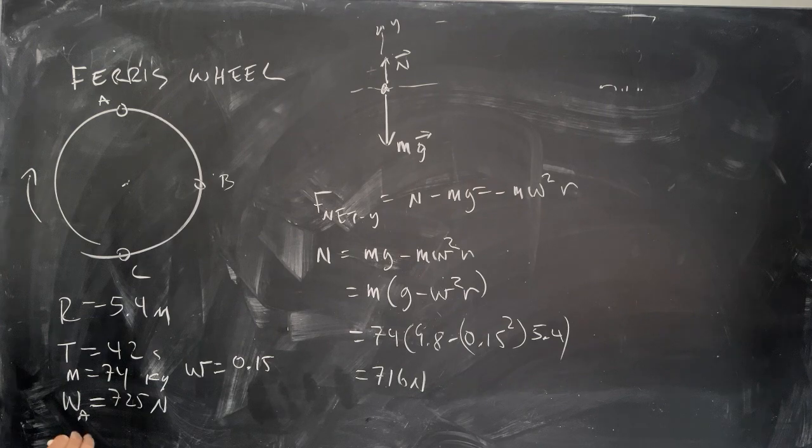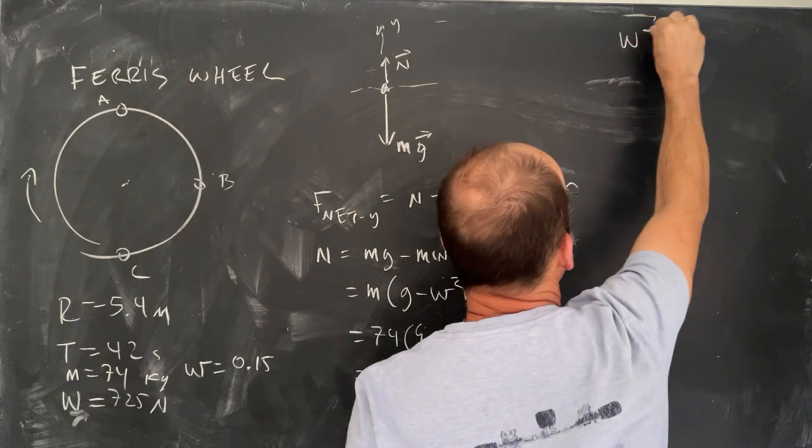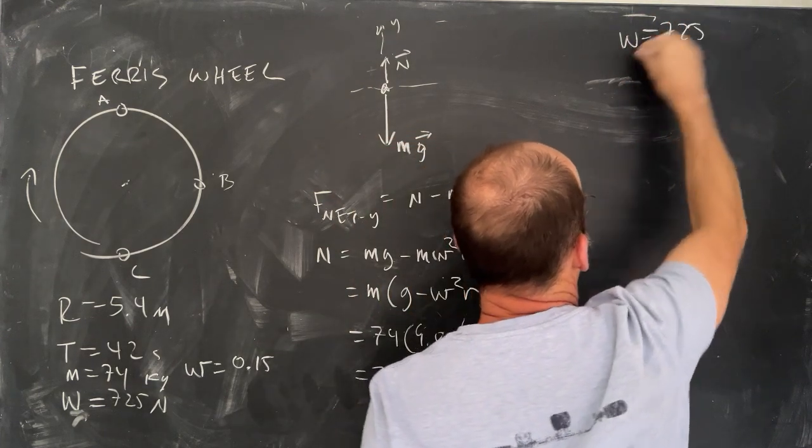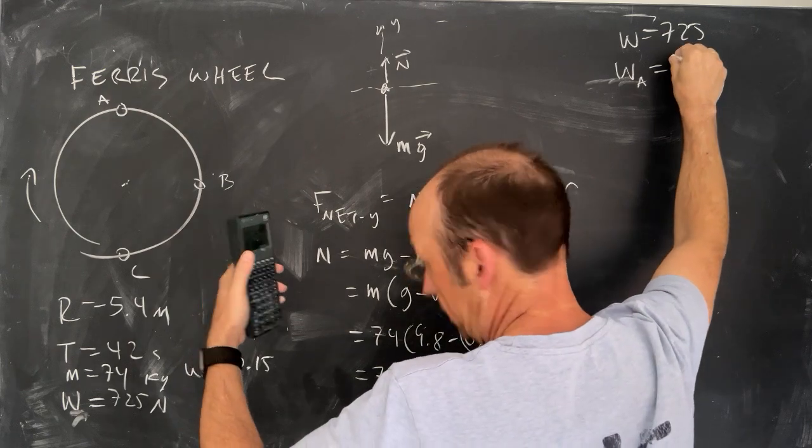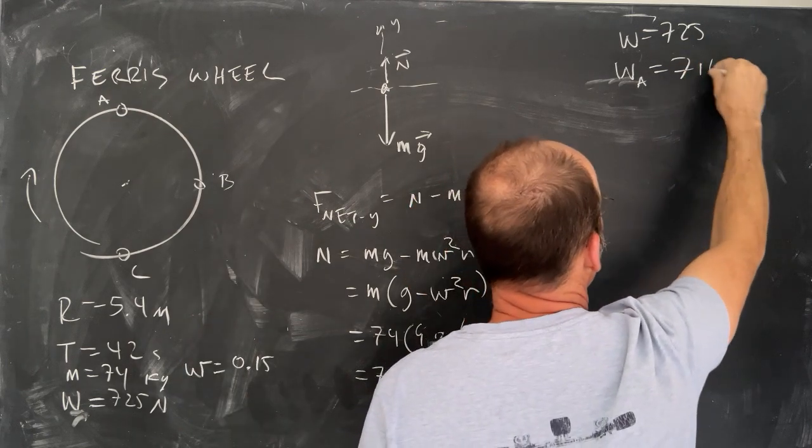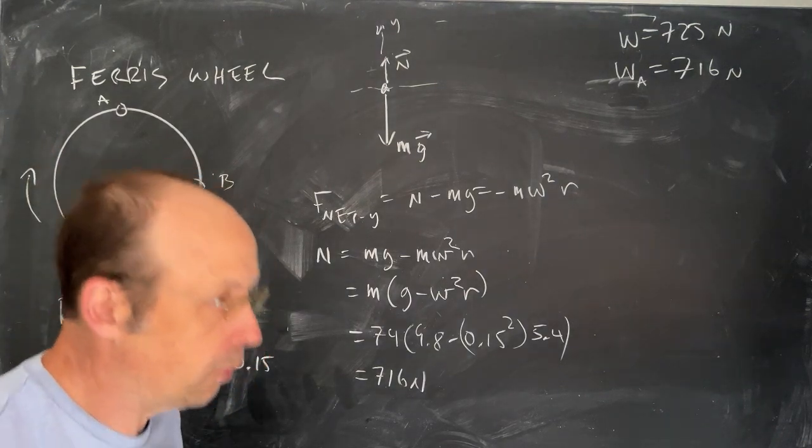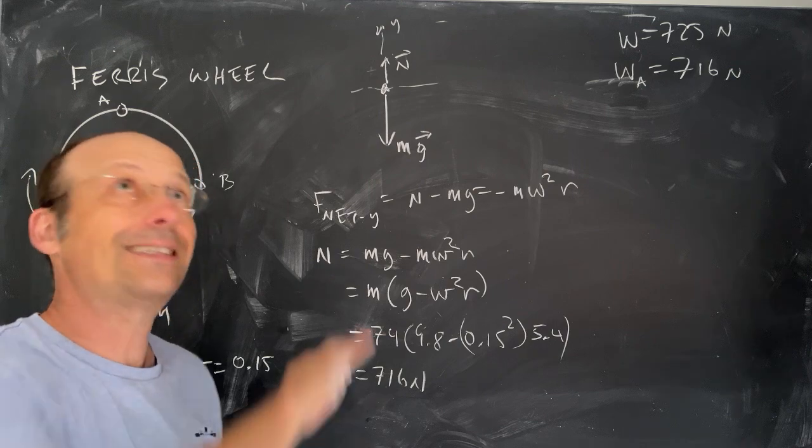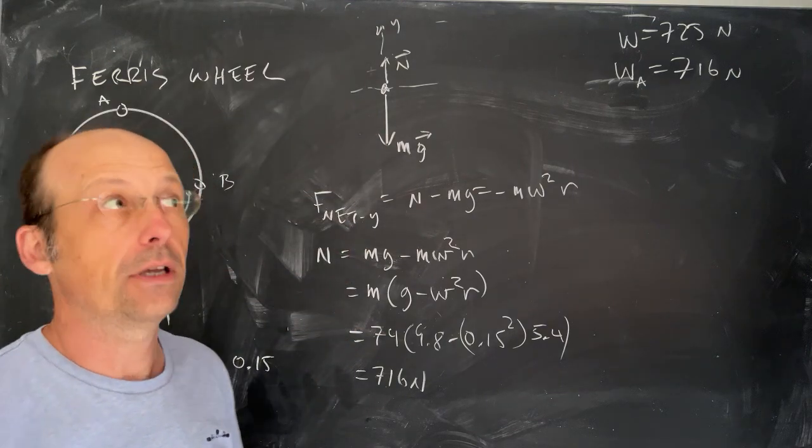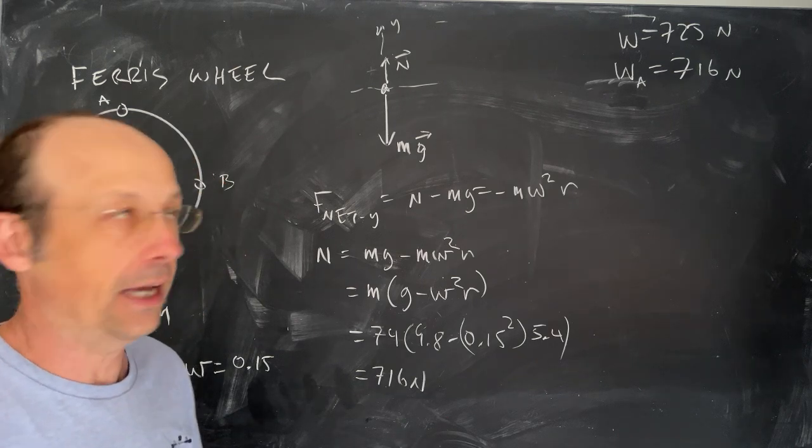So apparent weight at A is 716 newtons. So a little bit lower. You would feel lighter. If you've ever been on a ferris wheel, when you're up at the top, you feel a little bit lighter. That's what makes it fun. Plus you can see a lot of stuff, get a different view, take a moment to sit down and relax.